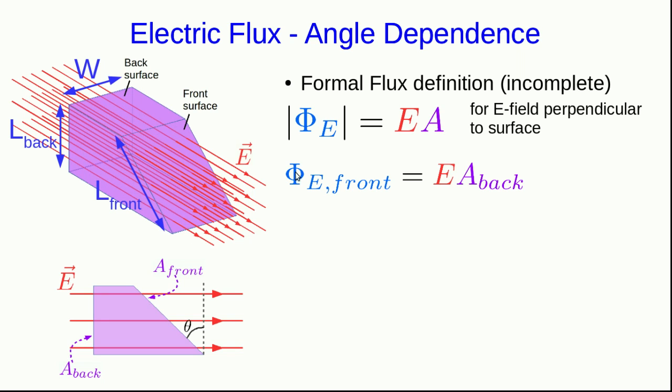Now what I really want is the flux through the front in terms of the E field and the area of the front with whatever angle dependence. And so I want to replace this A_back with something in terms of A_front. Notice A_back is w·l_back. It's just a rectangle. And so all we need now is a relationship between l_back and l_front.